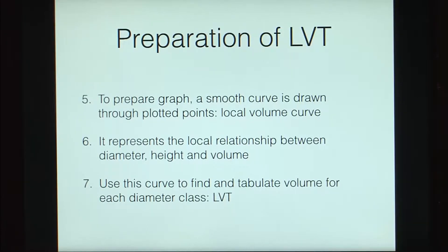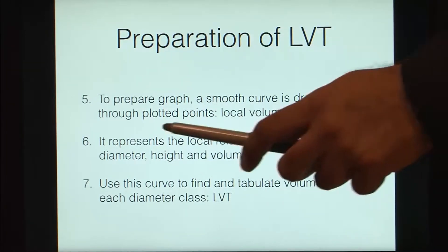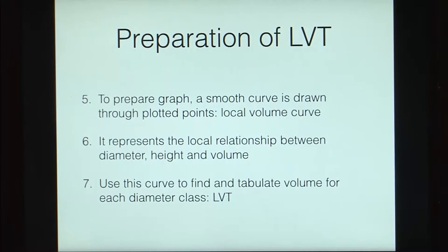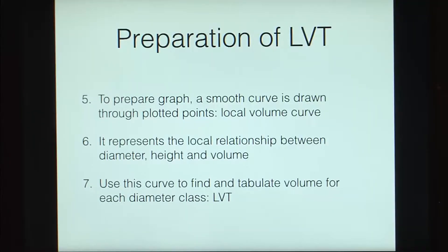The smooth curve drawn represents the local relationship between diameter, height, and volume. We use this curve to find and tabulate the volumes for each diameter class, and once we do that, we get the local volume table.